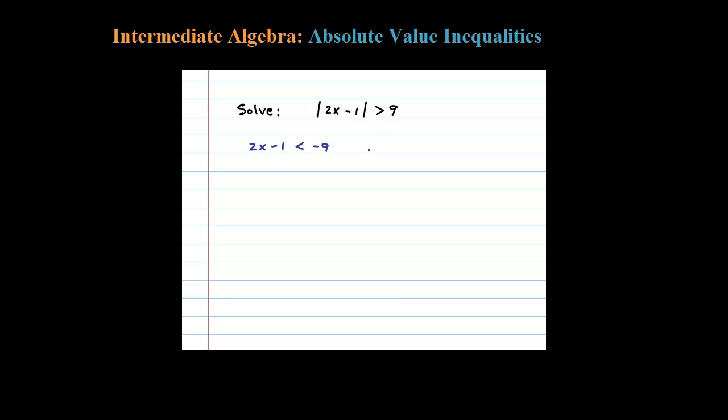10 is greater than 9, so the argument is less than negative 9, or certainly the argument there, 2x minus 1, could also be greater than 9. If you had a 10 here, the absolute value of 10 is greater than 9 as well. Once you have it set up like this, you get two linear inequalities you could solve like normal.